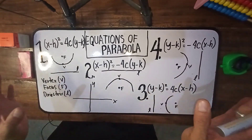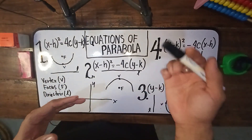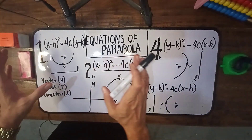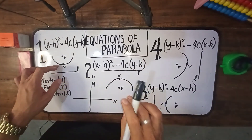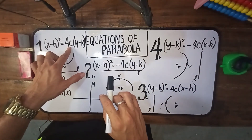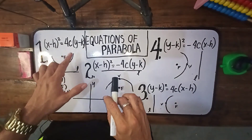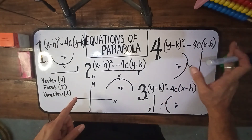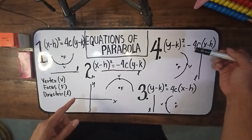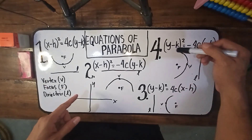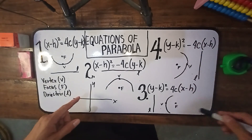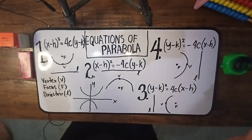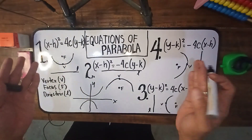Paano ko naman masasabi kung nasa opens to the left or right, opens up or down? So titignan mo naman dito yung 4c — anong sign ng 4c? Tingin tayo ulit dun sa opens upward and downward: sa opens upward, kapag positive yung 4c, ibig sabihin opens upward yun. Kapag negative yung 4c, opens downward yun. Similar with number 3 and number 4: if this is negative, naka-open to the left; if this is positive, it is open to the right. Ito yung pattern ko para ma-identify ko ng mas mabilis kung anong equation ng parabola yung gagamitin.